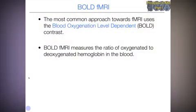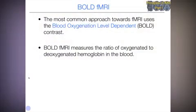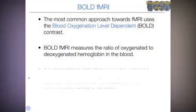So what does this signal that we get in this time series mean? Well, the most common approach towards fMRI uses what's called the blood oxygenation level dependent or BOLD contrast. BOLD fMRI measures the ratio of oxygenated to deoxygenated hemoglobin in the blood. It's important to note that BOLD fMRI doesn't measure neural activation directly. Instead, what it does is it measures the metabolic demands or the oxygen consumption of active neurons. When neurons are active, they need access to oxygen to replenish their energy. And it's this oxygen consumption that we can see, which is a side effect of the neural activation that we're actually interested in studying.